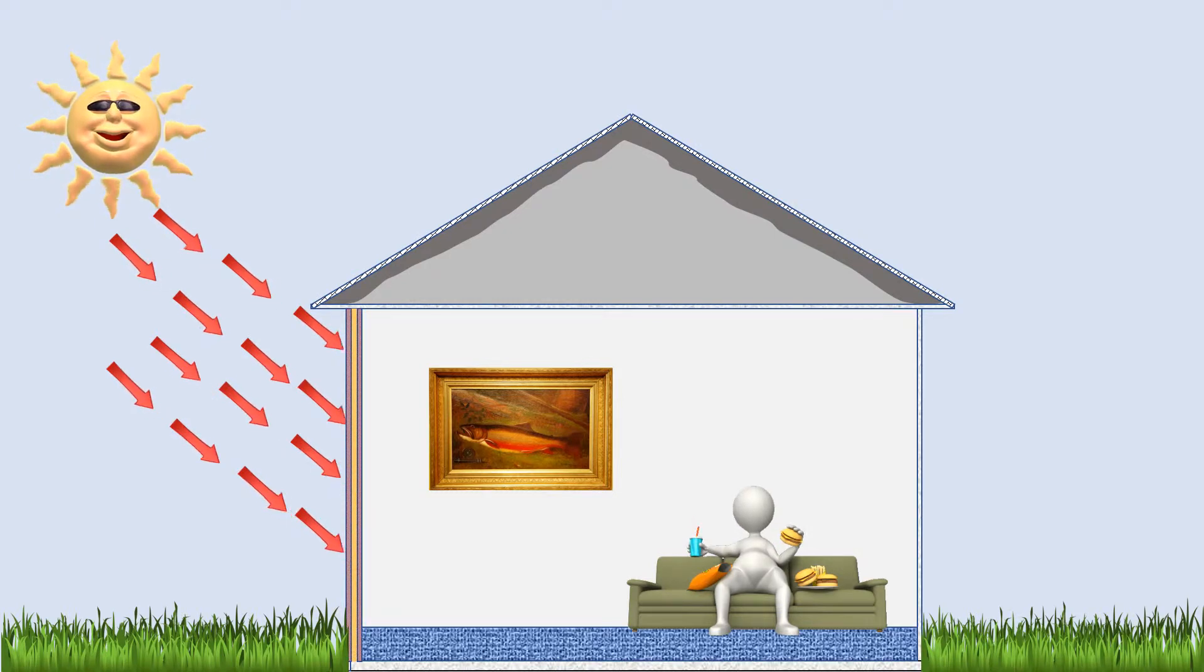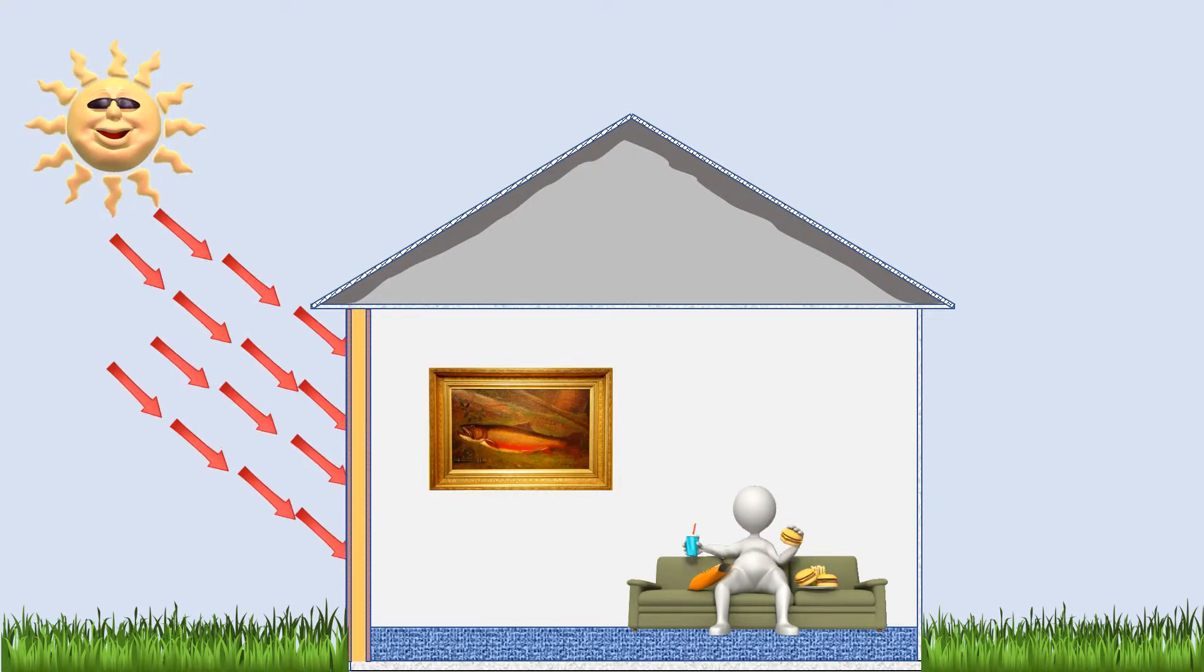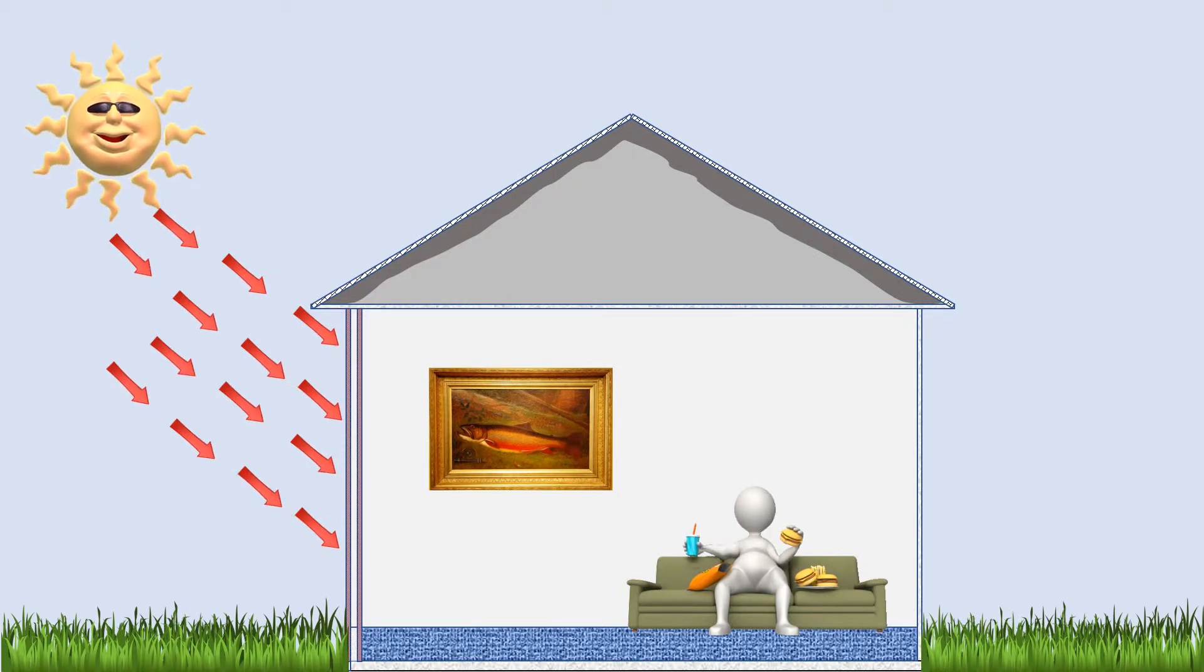So a 2x4 wall with R13 insulation will allow more heat into the building than a 2x6 wall with R20. And just like the roof, the color of the walls makes a huge difference also. Again, years ago we didn't insulate walls as much, if at all, so four or five hundred square feet per ton worked.